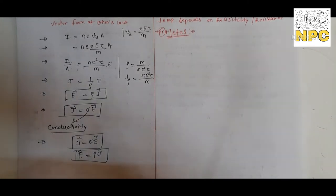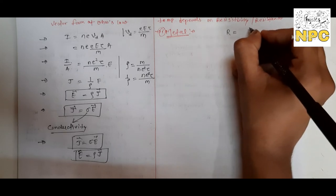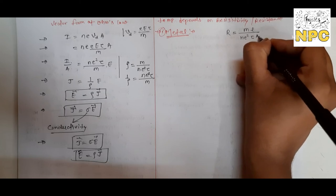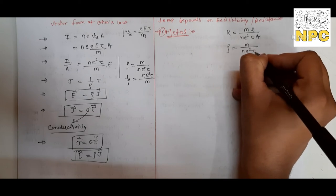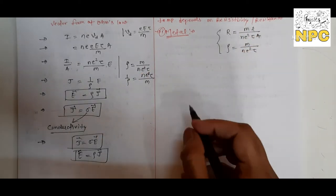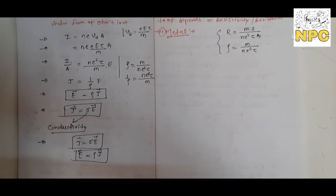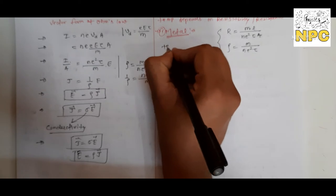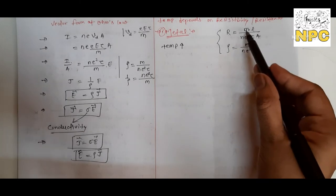For metals, let us first write the formulas. R equals mL divided by ne²τA, and rho equals m divided by ne²τ. In metals, the charge carriers are free electrons. Now, if we increase the temperature, will the mass of electrons change? No — it is a fixed, constant quantity. And n is the number of electrons per unit volume.